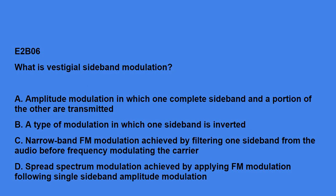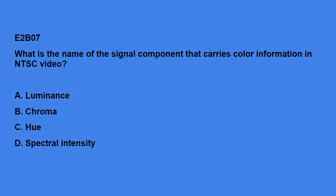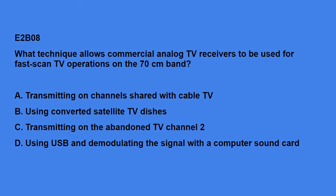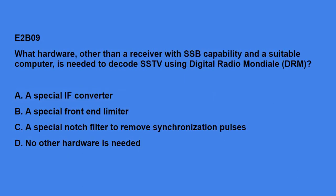E2B06: What is vestigial sideband modulation? Amplitude modulation in which one complete sideband and a portion of the other are transmitted. E2B07: What is the name of the signal component that carries color information in NTSC video? It's called Chroma. E2B08: What technique allows commercial analog TV receivers to be used for fast scan TV operations on the 70-centimeter band? Transmitting on channels shared with cable TV. E2B09: What hardware other than a receiver with SSB capability and suitable computer is needed to decode SSTV using digital radio Mondial? No other hardware is needed.